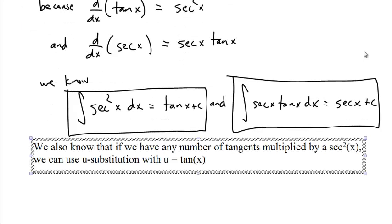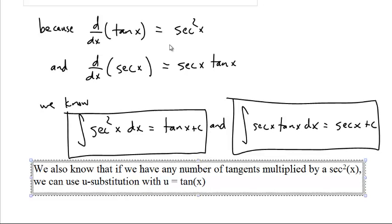It also tells us that if we have any number of tangents multiplied by a secant squared, we can do u-substitution with u equals tangent of x, and du will be secant squared x dx, which will sop up the secant squared.